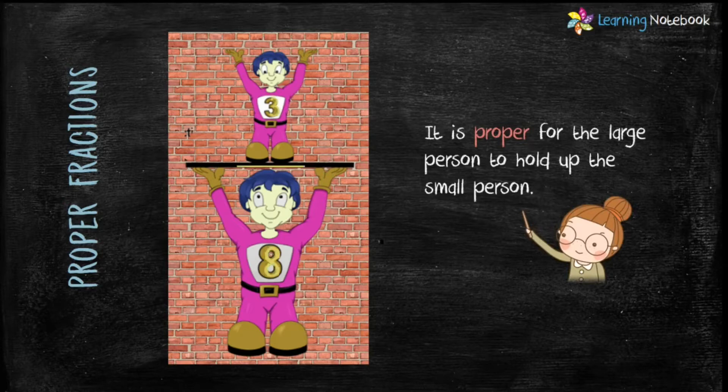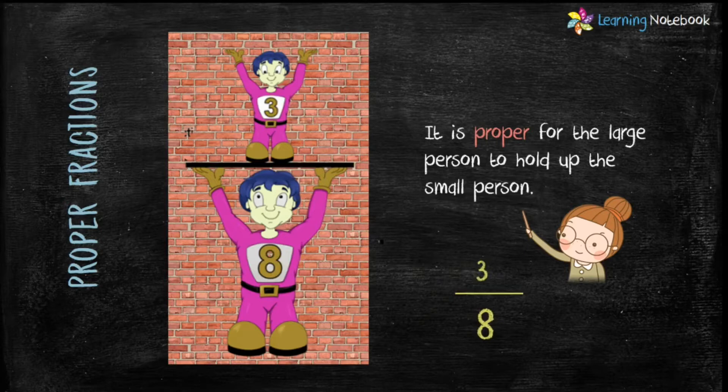Therefore, fractions like 3 by 8 are proper fractions because 8 is a larger number and it is holding up the smaller number 3.